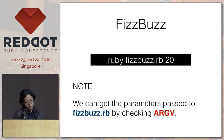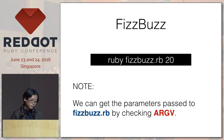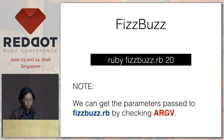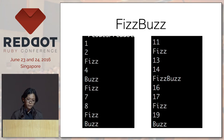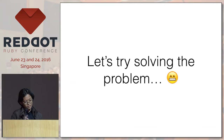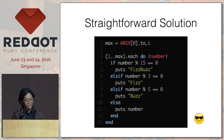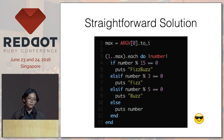So if we try to solve it straightforwardly — we're going to run the program using the Ruby command, and take note that we can get the parameters by using argv. The output should look like this. Since 1 and 2 are not divisible by 3 or 5, they are printed out. On 3, instead of printing 3, it prints Fizz, and so on. The straightforward solution would look like this — you have a loop and a series of conditions.